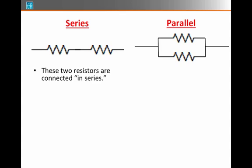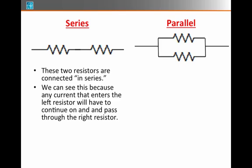The two resistors on the left are said to be connected in series. We can see this because any current that enters the left resistor will have to pass on through it and through the second resistor on the right. That's what we mean by in series, because by Kirchhoff's first law, the current passing through the first resistor equals the current passing through the second.